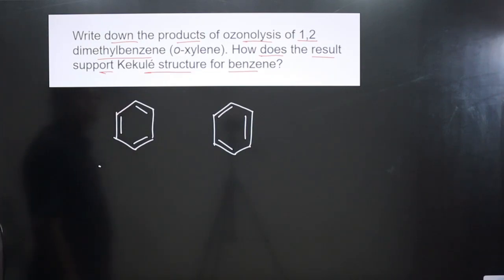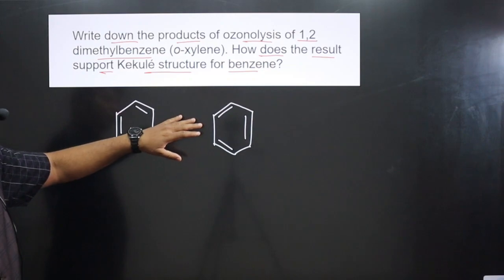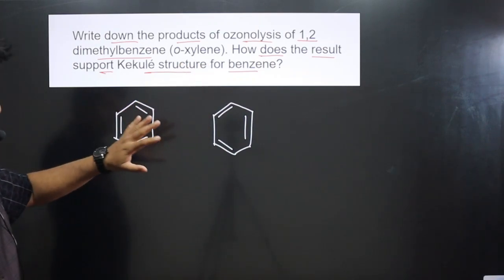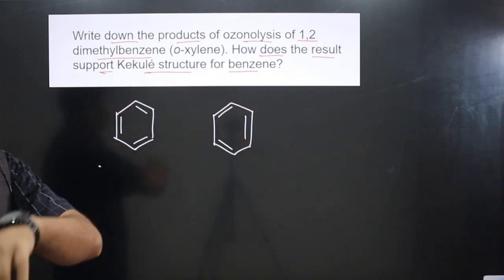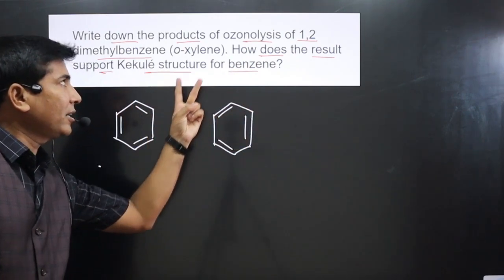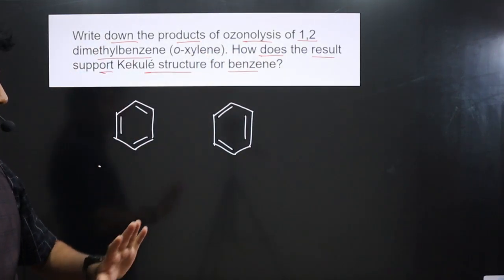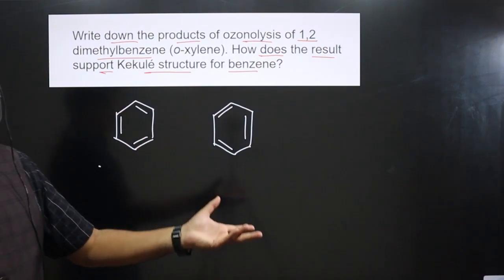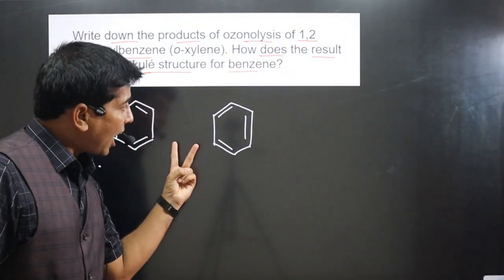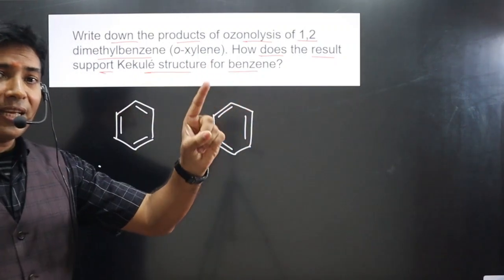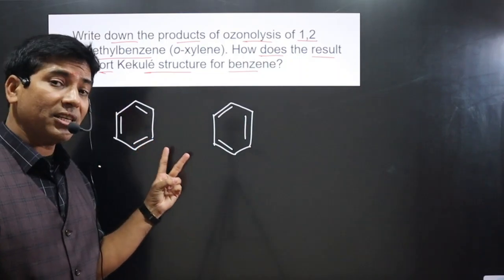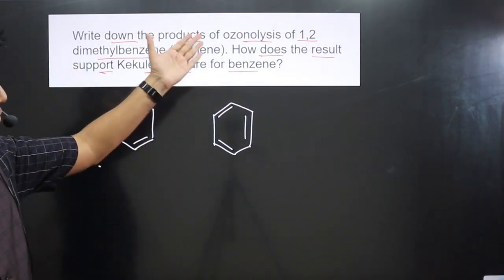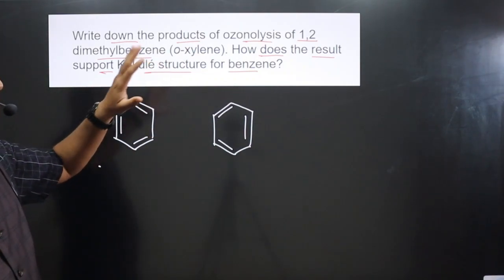We can use these two structures to carry out ozonolysis. If both structures undergo ozonolysis and produce the same product, then only one structure for benzene is possible. But if both give different products on ozonolysis, then two different structures are possible. We can carry out ozonolysis and justify the Kekulé structure for benzene.